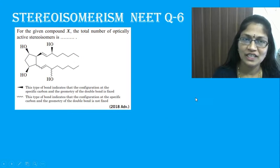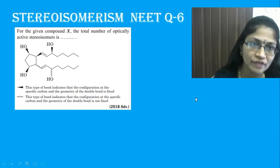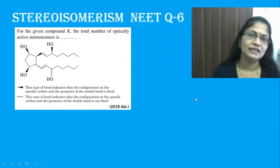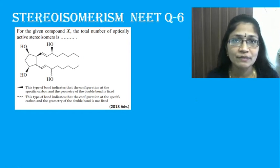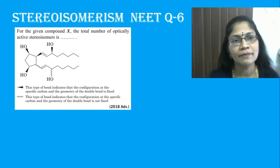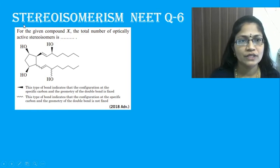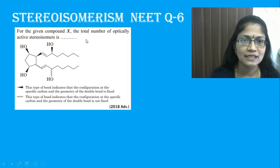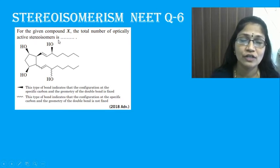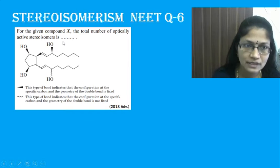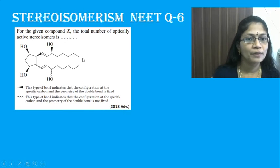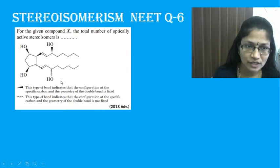Welcome to my channel Vin Kim. Today we are going to see a sixth question from stereoisomerism. The question is: for the given compound X, what is the total number of optically active stereoisomers?